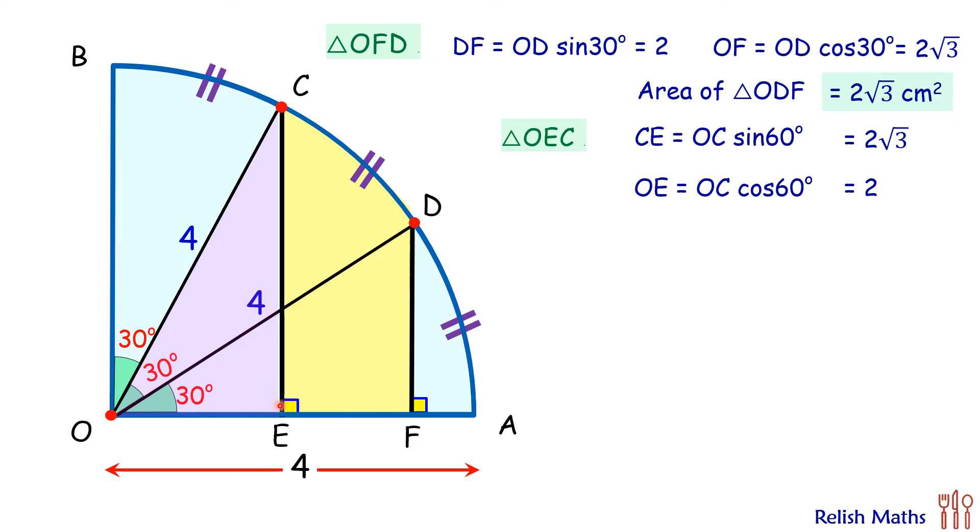Finding the area of this triangle, half base into height gives area as 2 root 3 cm square.